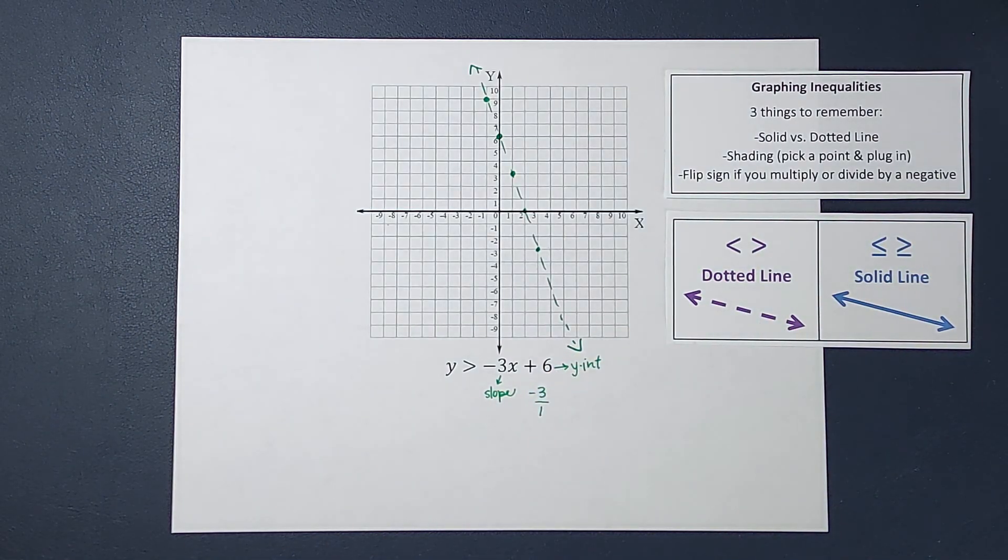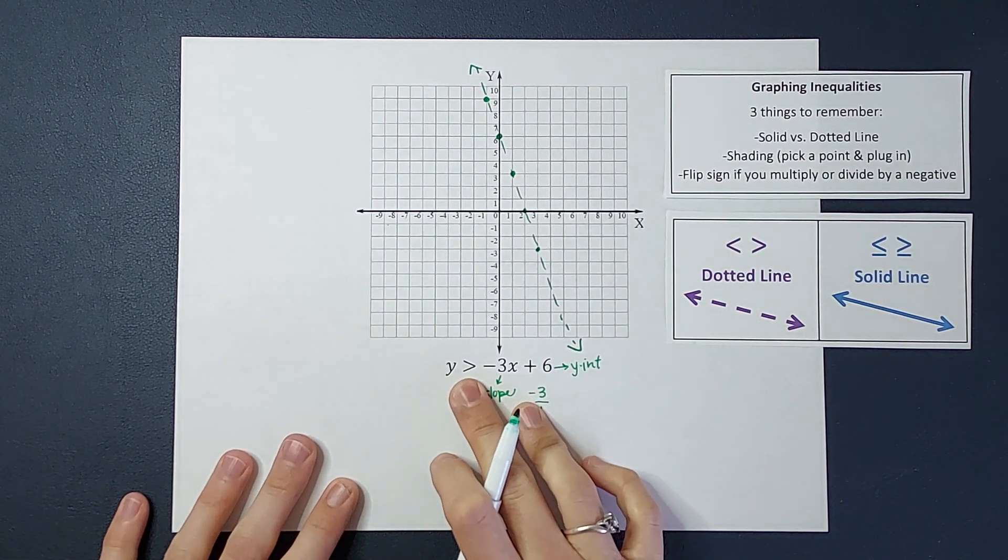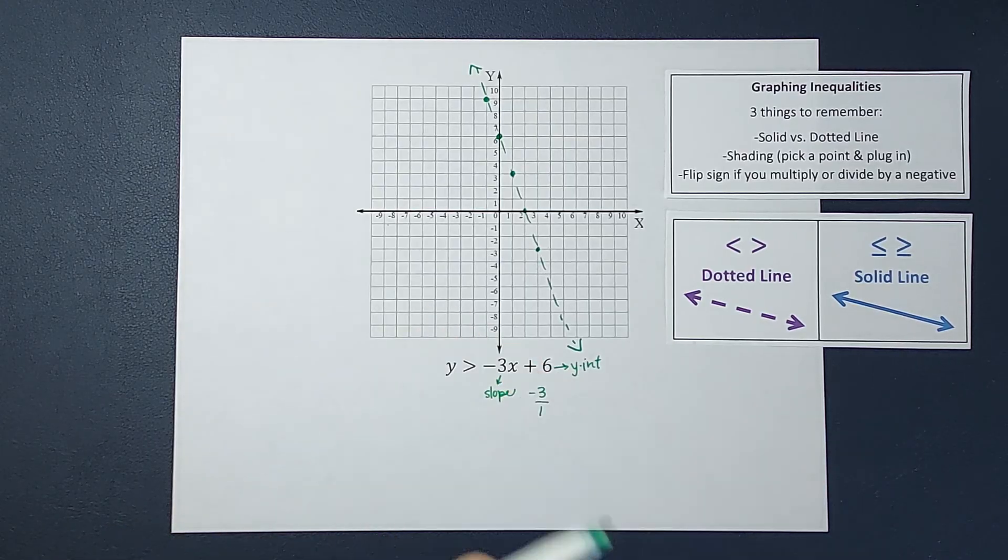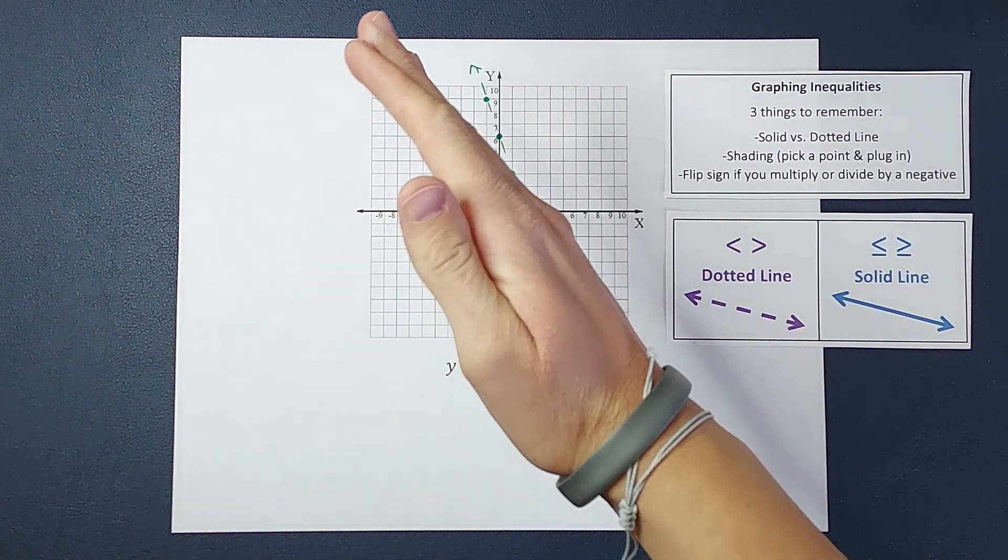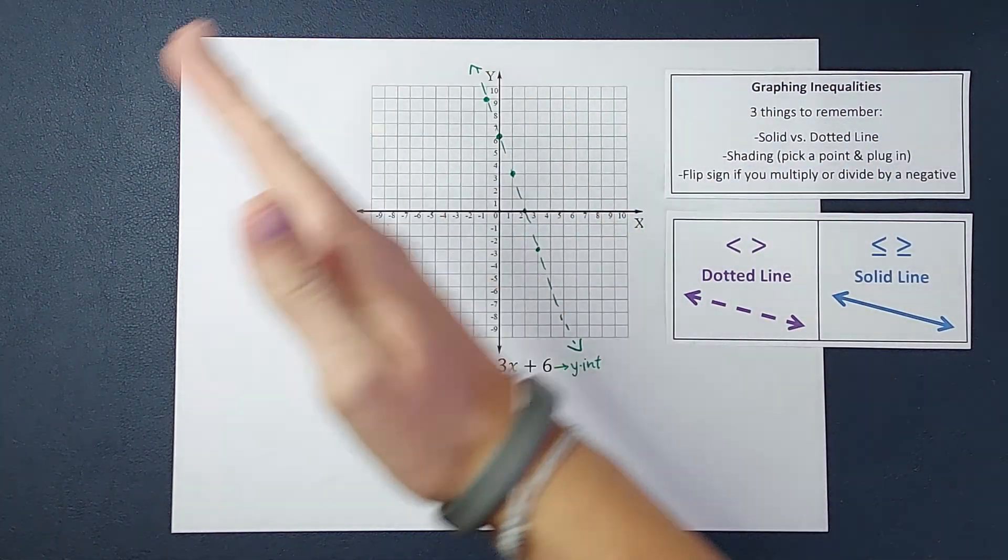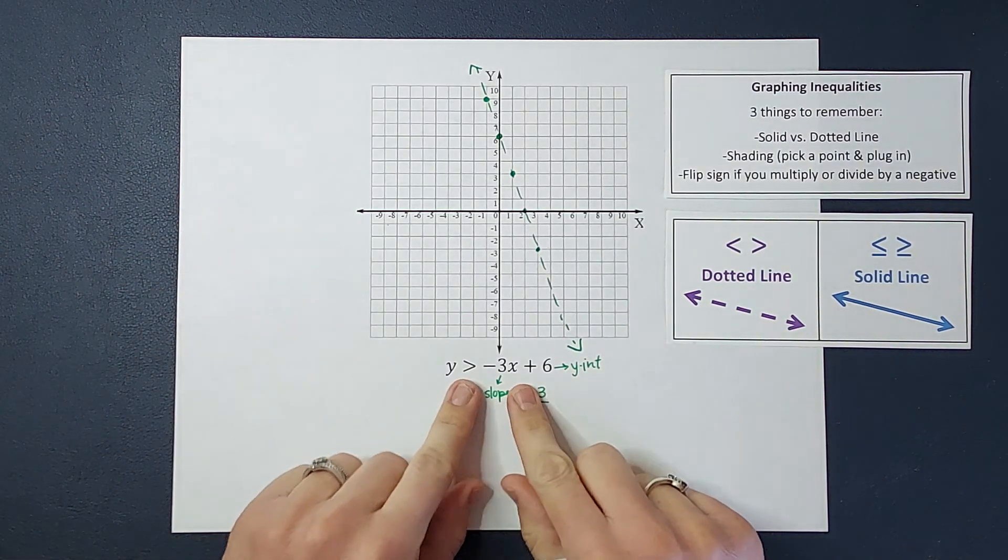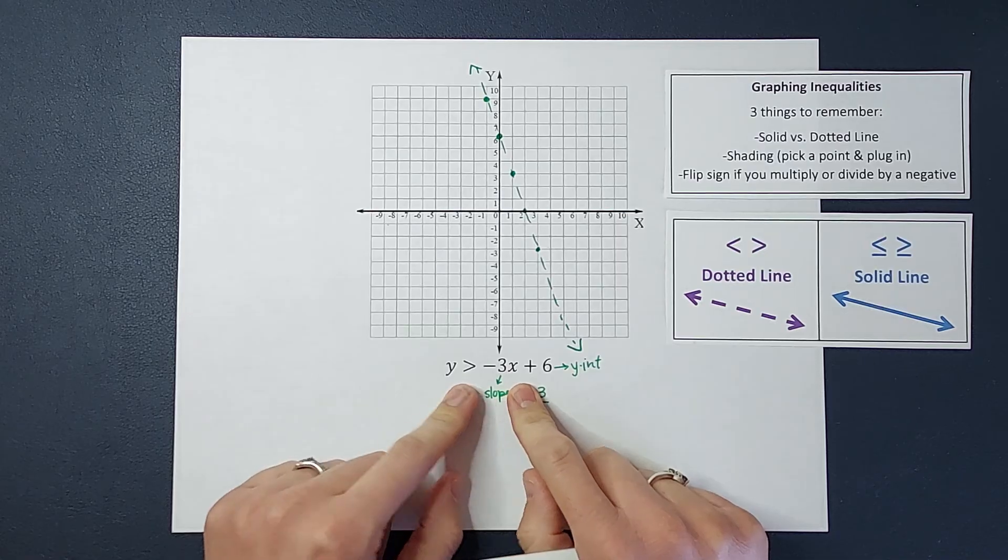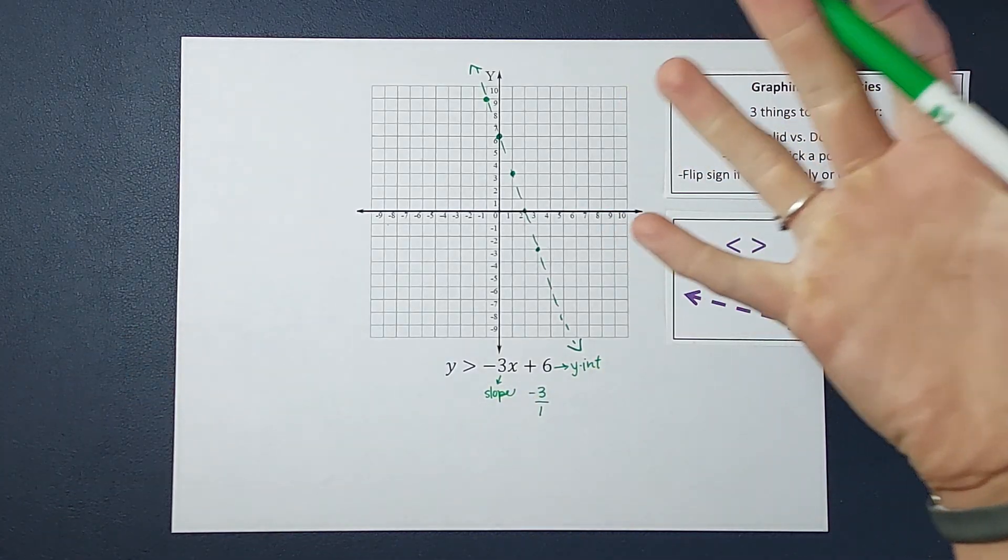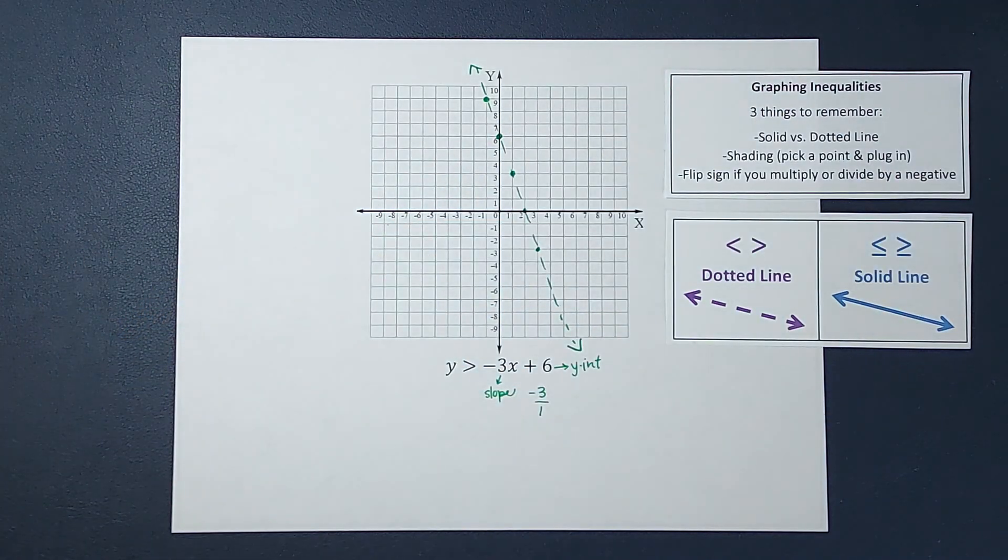All right, now the last thing is shading. Since this is an inequality, that means that either this side of that dotted line or this side of that dotted line, all of those ordered pairs can be answers to this. So we need to figure out which side contains all of those answers.